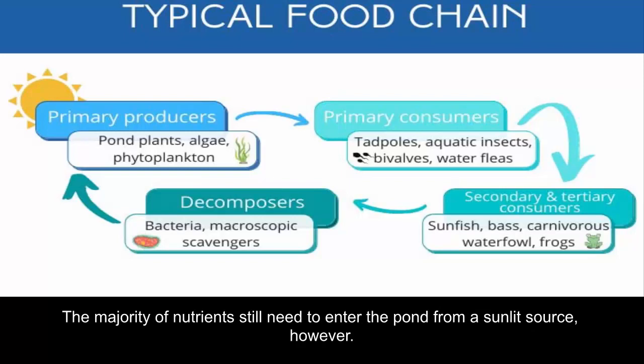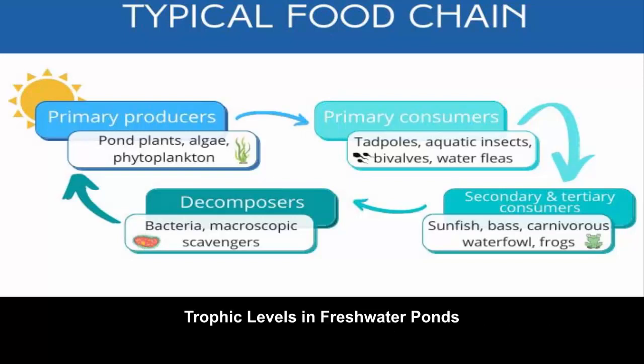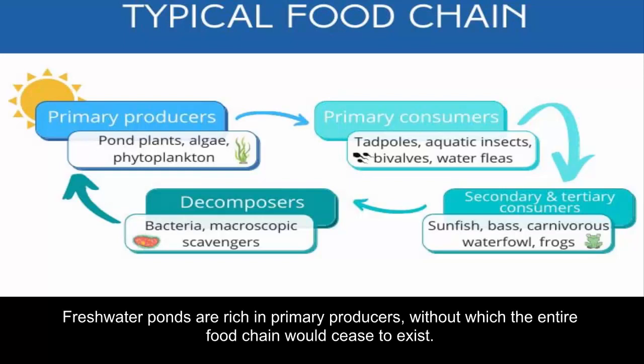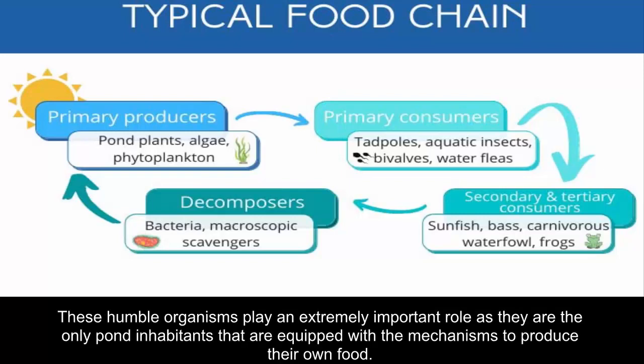The majority of nutrients still need to enter the pond from a sunlit source. Freshwater ponds are rich in primary producers, without which the entire food chain would cease to exist. These humble organisms play an extremely important role as they are the only pond inhabitants equipped with the mechanisms to produce their own food.